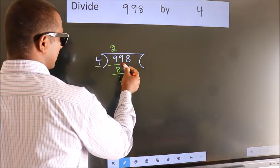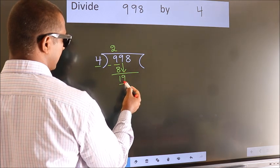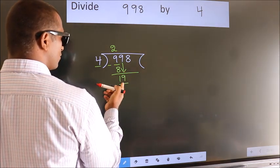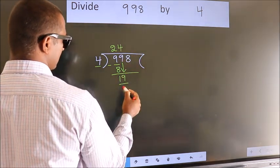After this, bring down the beside number. So 9 down. So 19. A number close to 19 in 4 table is 4 fours, 16.